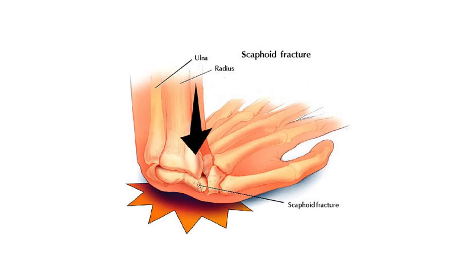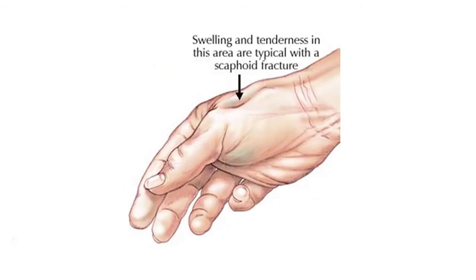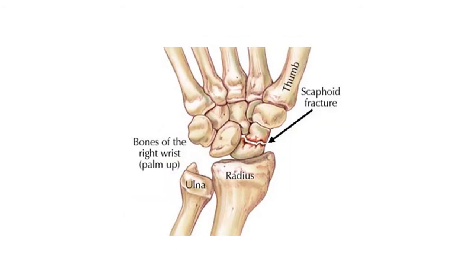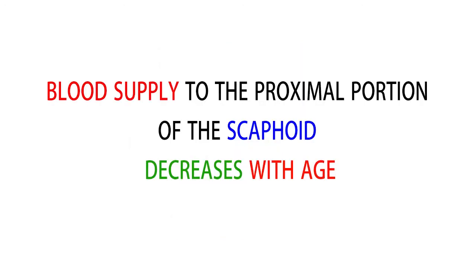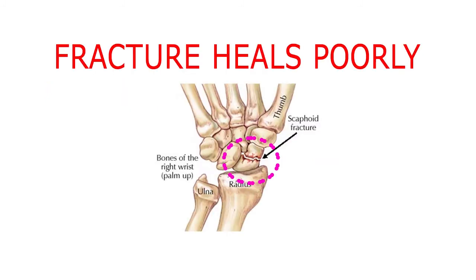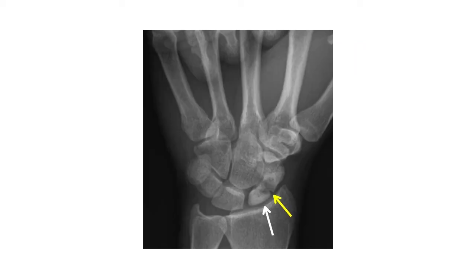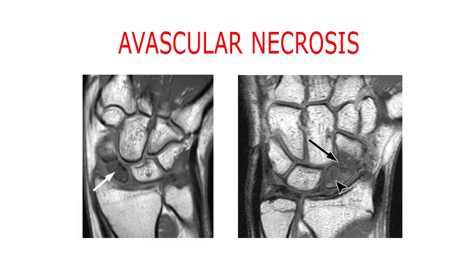From a clinical point of view, the scaphoid is the most frequently fractured carpal bone, which often results from falling on an outstretched hand. The fracture usually occurs perpendicular to the long axis of the bone. Because the blood supply to the proximal portion of the scaphoid decreases with age, a fracture to this segment usually heals poorly and often results in necrosis of the proximal segment — known as avascular necrosis.